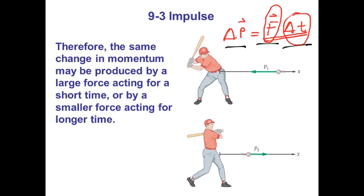If the impact duration is longer — say 0.5 seconds — with the same change in momentum, the force acting on the object will be smaller. You can change the impact time: if you decrease the impact time while keeping the momentum change the same, you must increase the force. If you increase the impact time while conserving the same momentum change, the force must decrease.